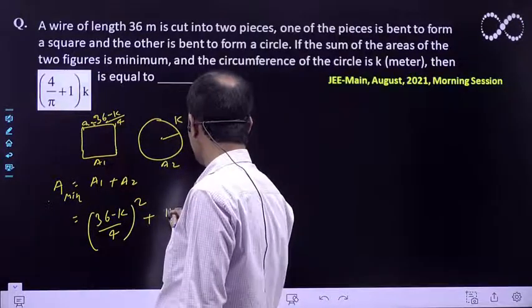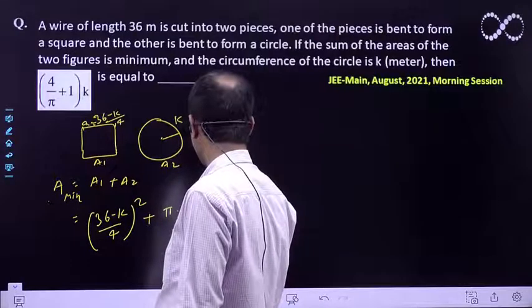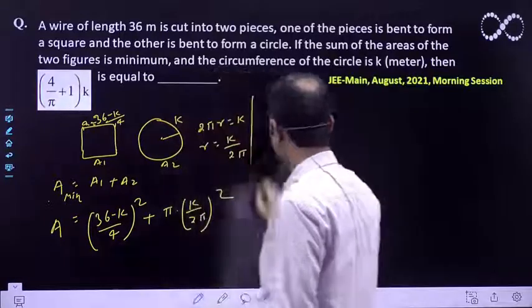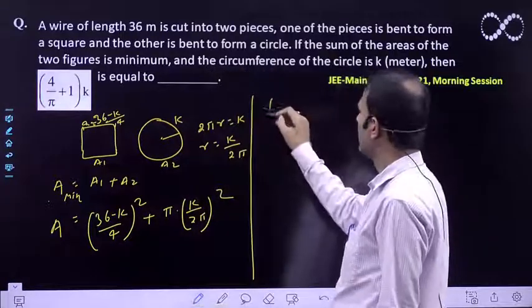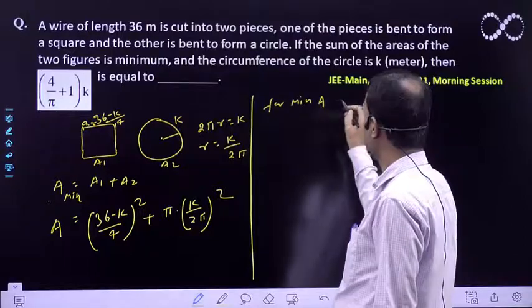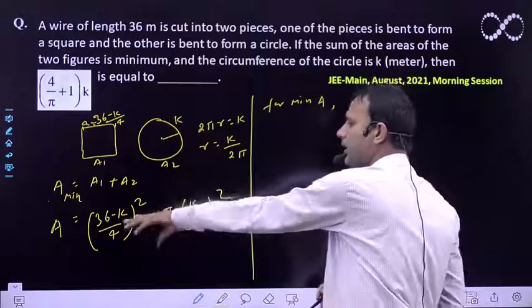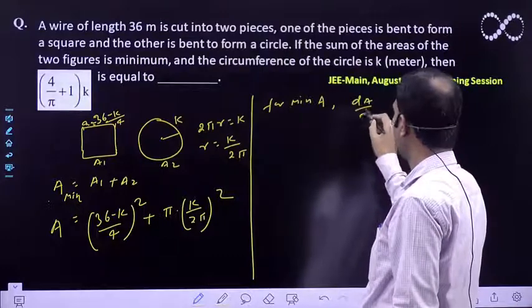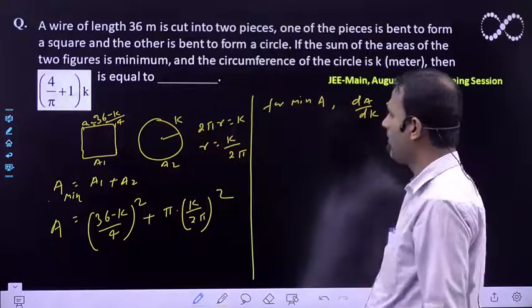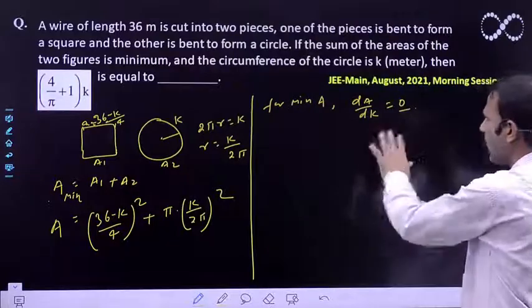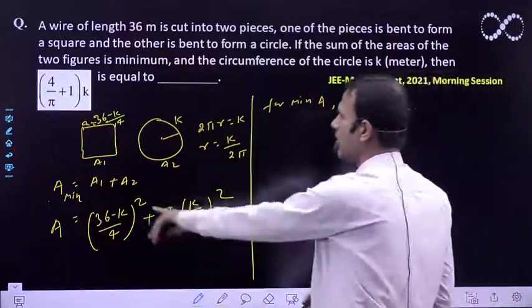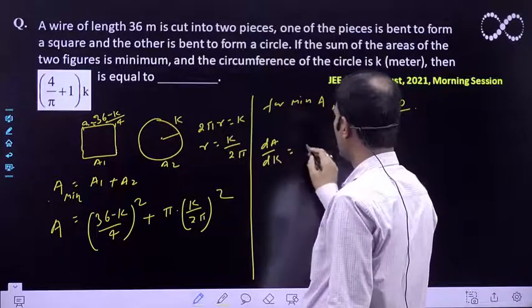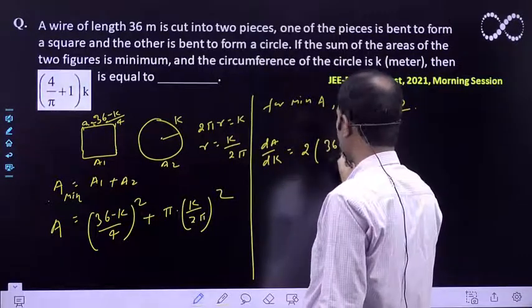The value of r is k/2π. This area needs to be minimum. For minimum area, we differentiate: dA/dk equals twice (36-k)/4...